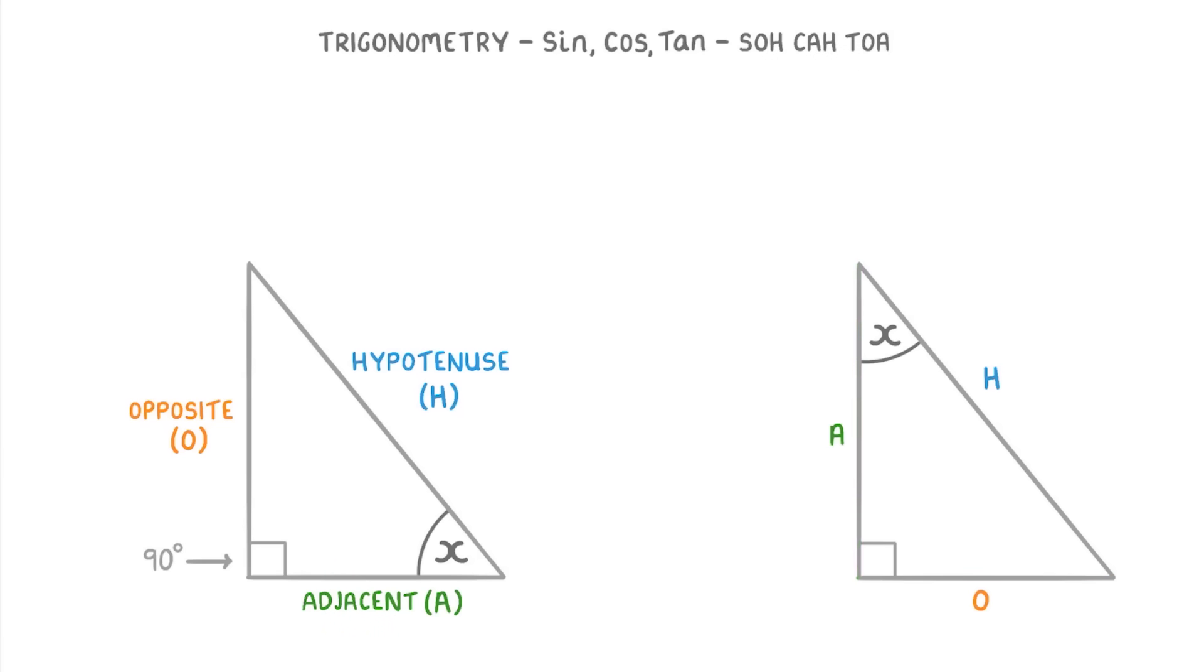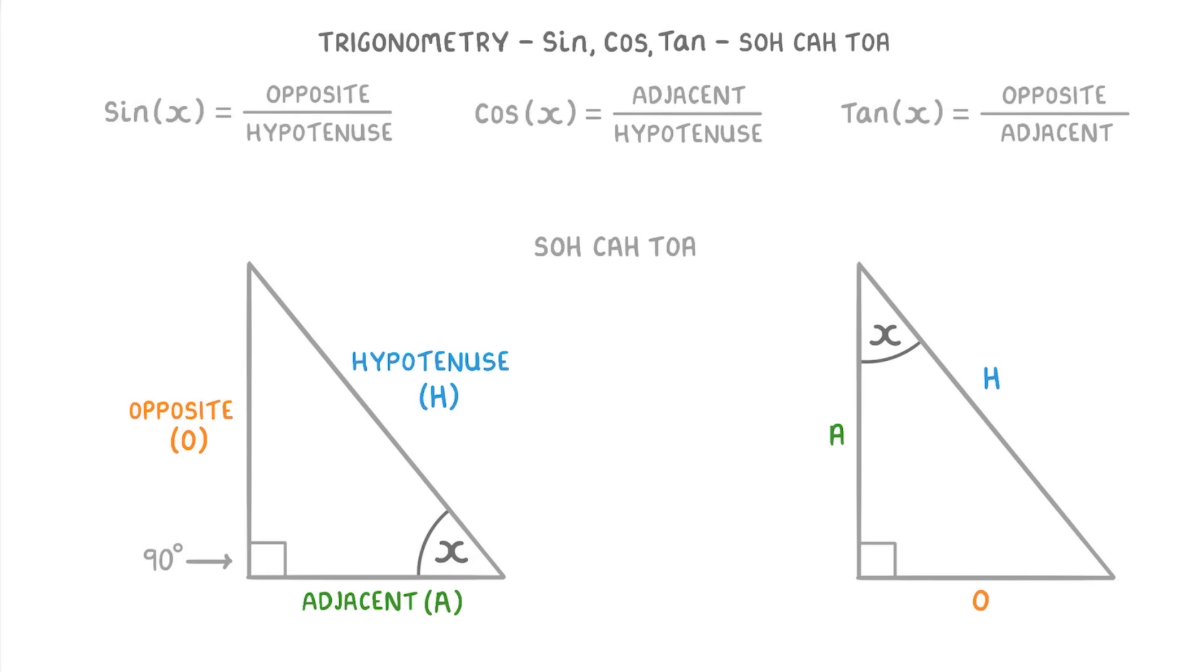Now to help us work out the unknown angles and sides, we're going to be using three different equations. Sine X equals opposite over hypotenuse, Cos or cosine X equals adjacent over hypotenuse, and tan equals opposite over adjacent. Unfortunately, you have to remember all of these off by heart, but what's easier is just to remember the phrase SOHCAHTOA, and then you can work out the equations from that.